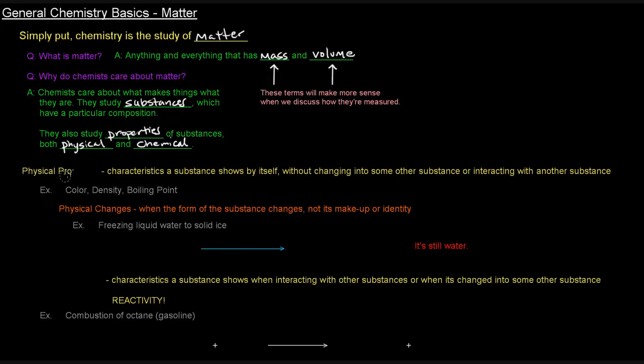So what is a physical property and what is a chemical property? Well, let's start with physical properties. Physical properties are characteristics a substance shows by itself without changing into some other substance or interacting with another substance. This is pretty important. The really important part of this definition is the by itself bit, by itself and without changing. So physical properties are characteristics of a substance that that substance shows by itself, and it's not changing into something else or interacting with something else or some other substance.